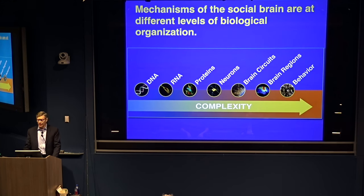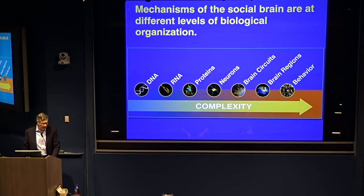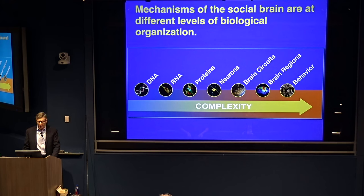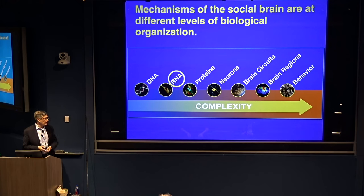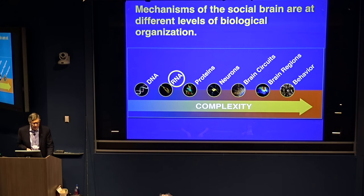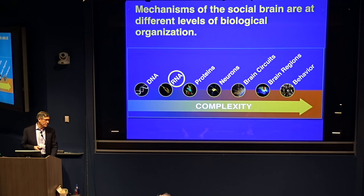When we think about the mechanisms of the social brain, one can address questions at different levels of biological organization, going from DNA all the way up to behavior, with many levels of organization within the brain. Tonight we'll be focusing especially on the level of gene expression and gene regulation — in the general parlance of biology, RNA — with a few words in comparison about some higher levels.